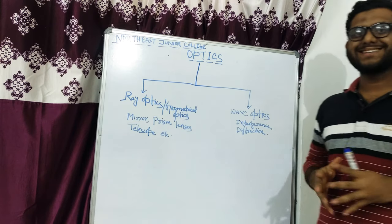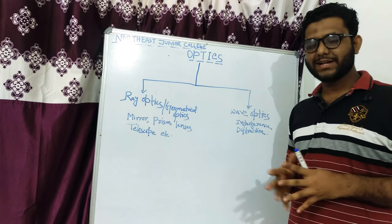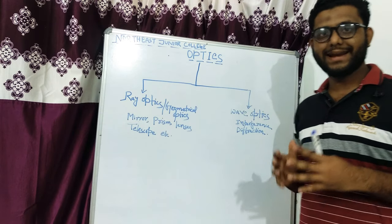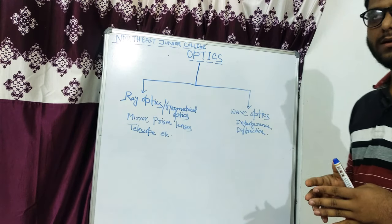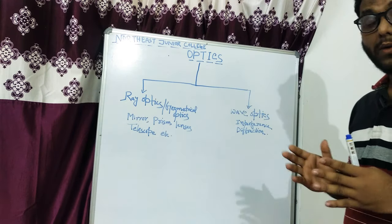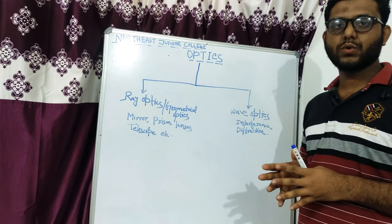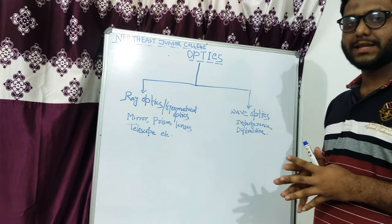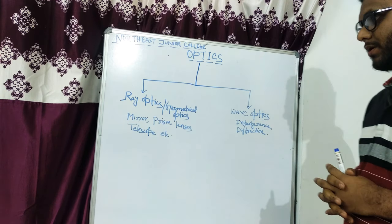Light is an electromagnetic radiation that has a wavelength of 4000 Angstrom to 7000 Angstrom.